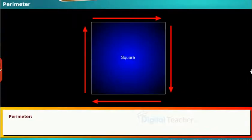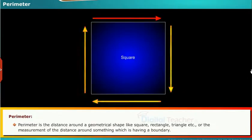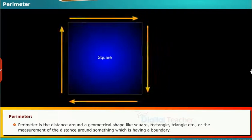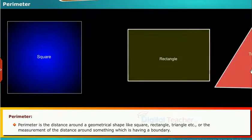Here, we shall learn what is perimeter. Perimeter is the distance around a geometrical shape like square, rectangle, triangle, etc.